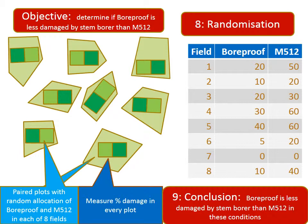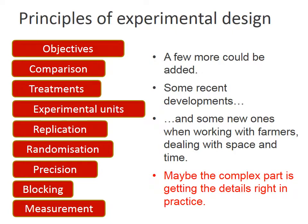The solution is to randomize — decide at random which plot of each pair gets the bore-proof and which gets M512. With a design like this, we can reach a clear conclusion. Of course, you may want to check that this conclusion applies in other conditions, such as other seasons or locations.